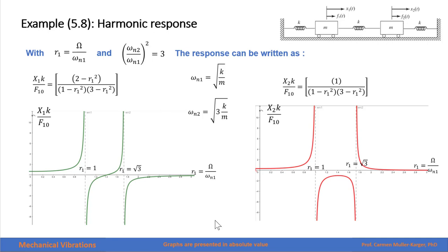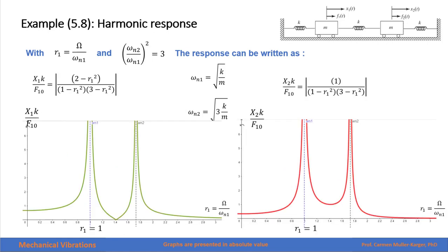Those are the two points of resonance of our two-degree-of-freedom system. We can also draw these responses as absolute values of the magnitude — there will be a phase angle when the magnitude becomes negative. As an absolute value, we clearly see that for the two natural frequencies the amplitude becomes infinite, and at one frequency the first mass has an amplitude of zero while the second mass has a finite amplitude.